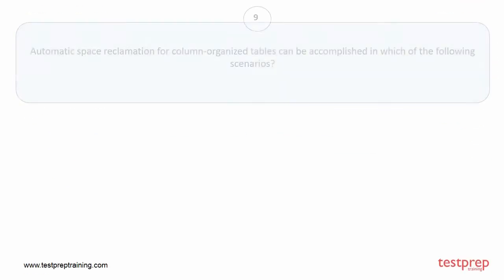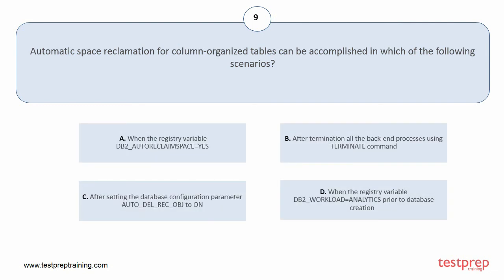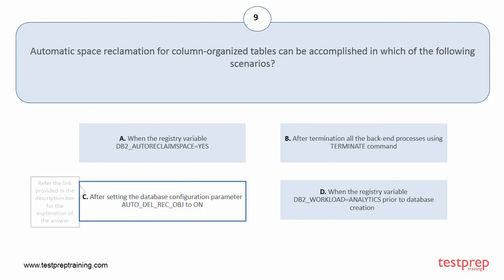Question number 9. Automatic space reclamation for column organized tables can be accomplished in which of the following scenarios? The correct answer is option C.